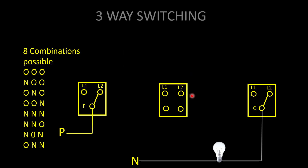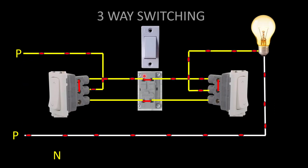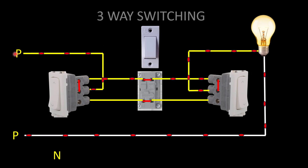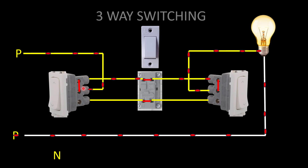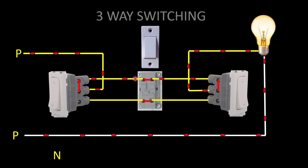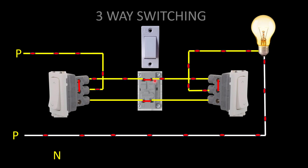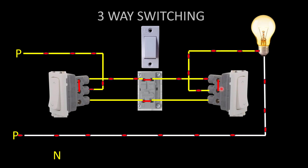The arrangement uses a two-way switch first, then an intermediate switch in the middle, then another two-way switch. Using these three switches, eight combinations are possible. Let's look at a scenario where all three switches are off — the light is on. Phase comes to the common of the first two-way switch, then from L1 it goes to L1 of the intermediate switch. In off condition, L1 and L1 are in contact, so from L1 of the second row it goes to L1 of the third switch. Since the third switch is off, common and L1 are in contact, and the light is on.